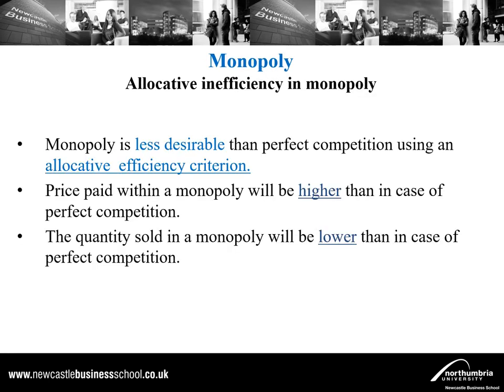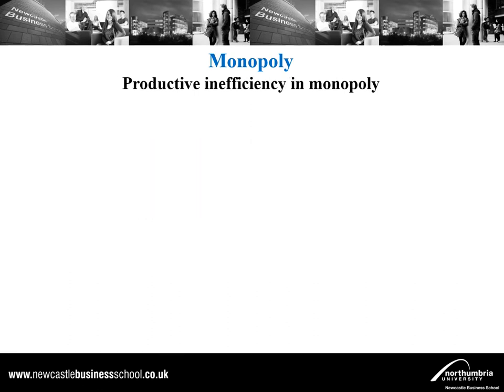Why is a monopoly less desirable than perfect competition using an allocative efficiency criterion? As we saw, there is a reduction in consumer surplus, an increase in producer surplus relative to perfect competition, and a deadweight loss. Furthermore, the price paid within a monopoly market structure will be higher than in perfect competition, and the quantity sold will be lower. Prices faced by consumers are higher and quantities available are lower as a result of a profit-maximizing monopoly.